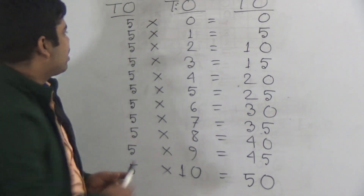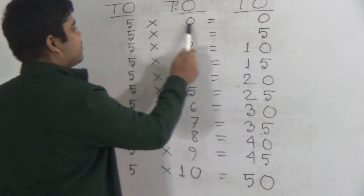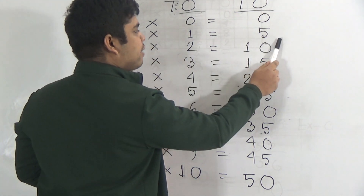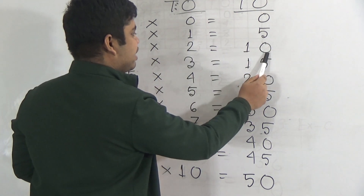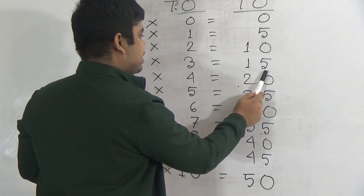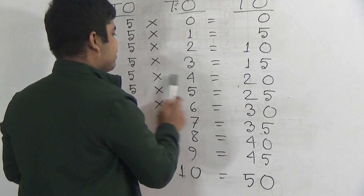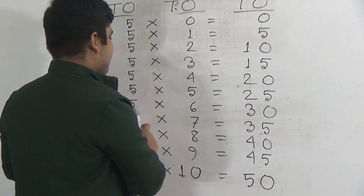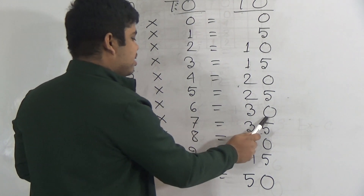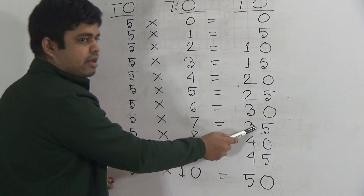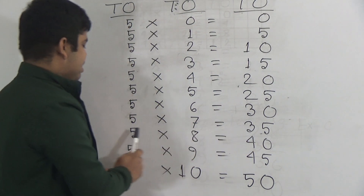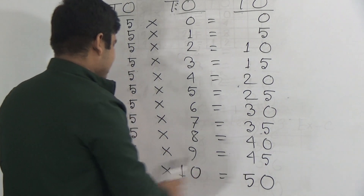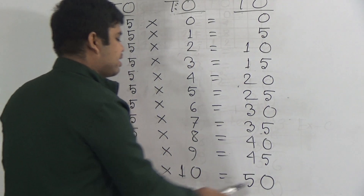Please read with me: 5 zeros are 0, 5 ones are 5, 5 twos are 10, 5 threes are 15, 5 fours are 20, 5 fives are 25, 5 sixes are 30, 5 sevens are 35, 5 eights are 40, 5 nines are 45, 5 tens are 50.